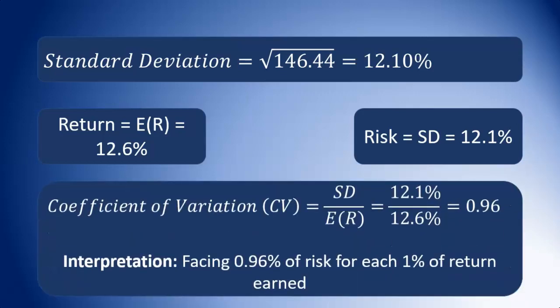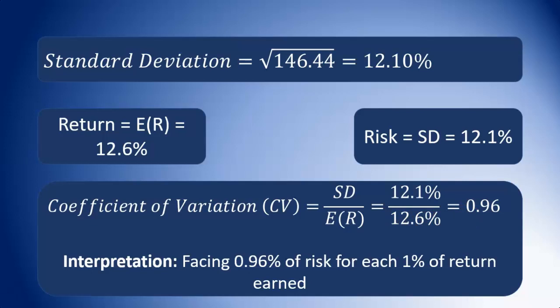Another measure of risk is the coefficient of variation, which measures relative risk. The standard deviation measures the total standalone risk of the investment, while the coefficient of variation measures the relative risk. The formula is standard deviation divided by the expected return — so 12.1 divided by 12.6 — giving us 0.96. We interpret this as: we face 0.96% of risk for each 1% of return that we are earning.